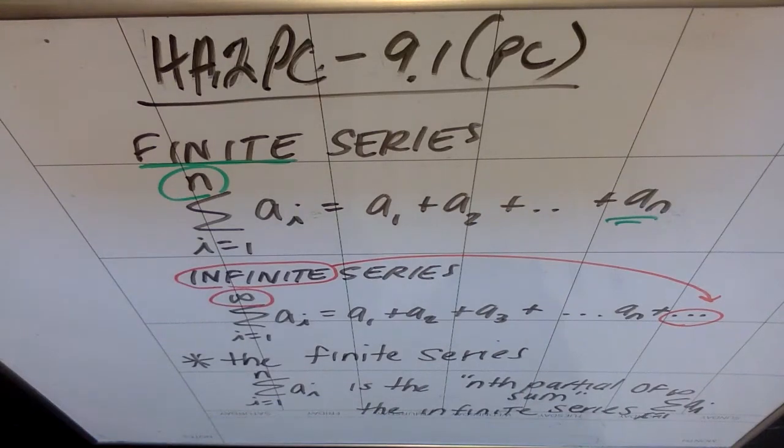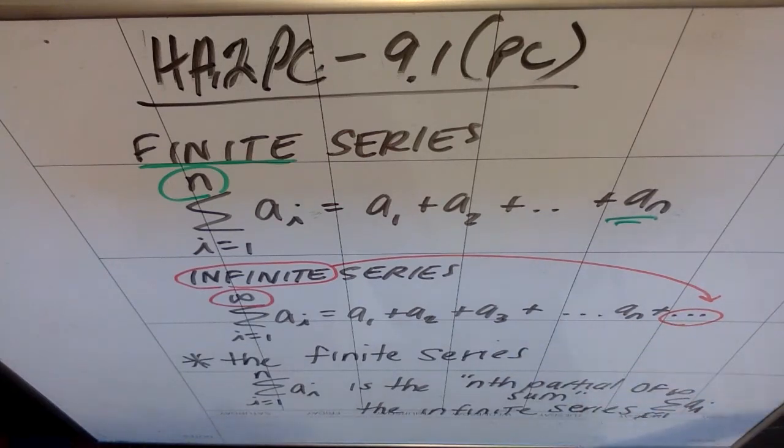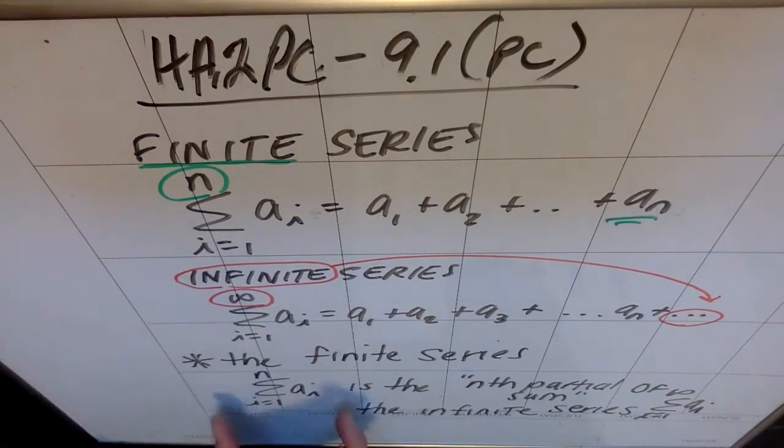An infinite series has an infinity as the upper summation bound. Meaning that it has this ellipsis at the end and it goes on forever. So this finite series that I copied back down here is also called the nth partial sum of the infinite series that I also copied back down here.